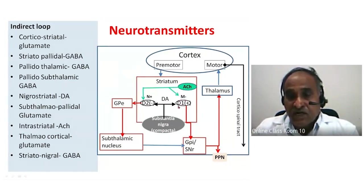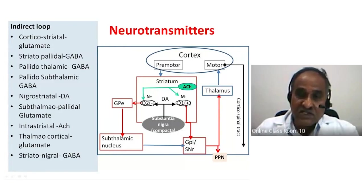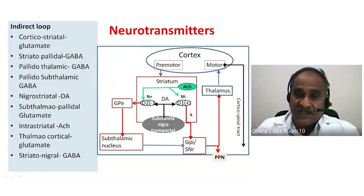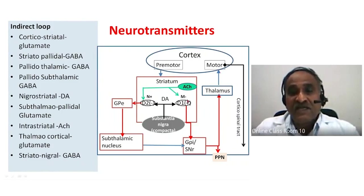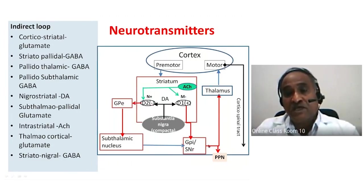The neurons reaching from the striatum to the GPI are expressed with dopamine D1 receptors, which are excitatory in nature, further enhancing direct circuit activity. In the indirect circuit, dopamine inhibits activity there, and this inhibition leads to greater inhibition of the thalamic output. These two mechanisms act as fine tuning.